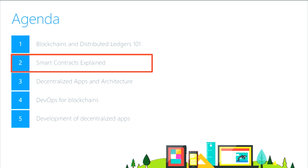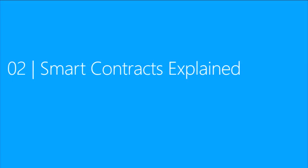Welcome back to the course on Microsoft Blockchain as a Service. This is Module 2, and in this module we're going to talk about smart contracts — Smart Contracts Explained. We're going to talk about some of the internals of what makes up a smart contract and how this thing actually functions in the blockchain.